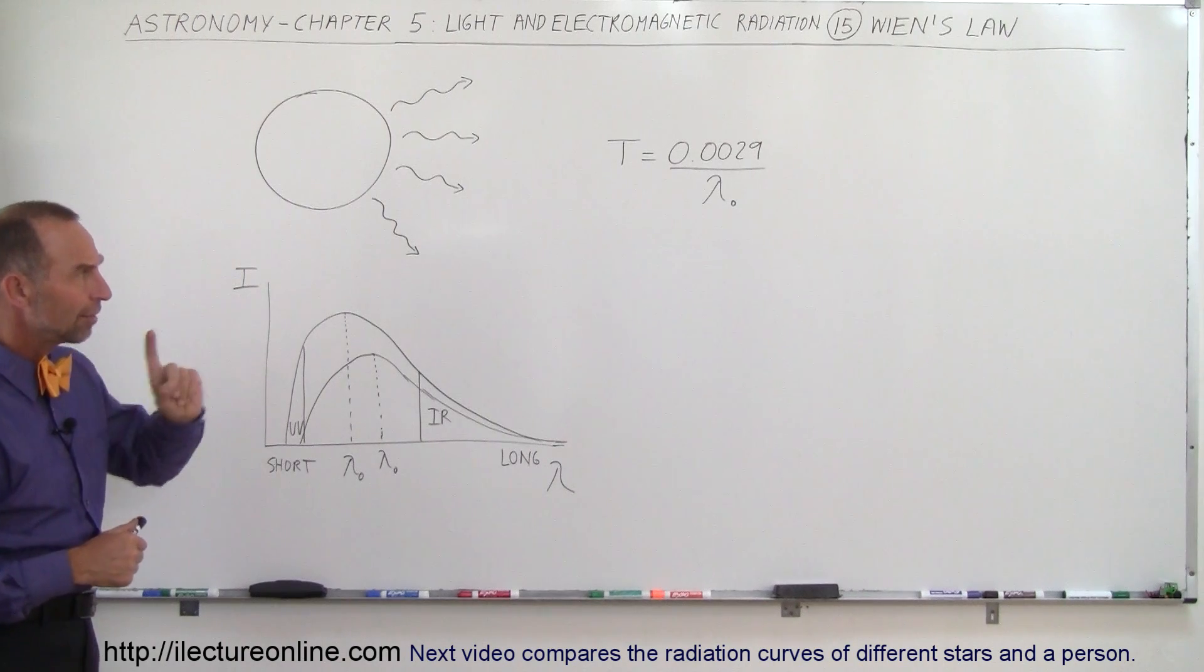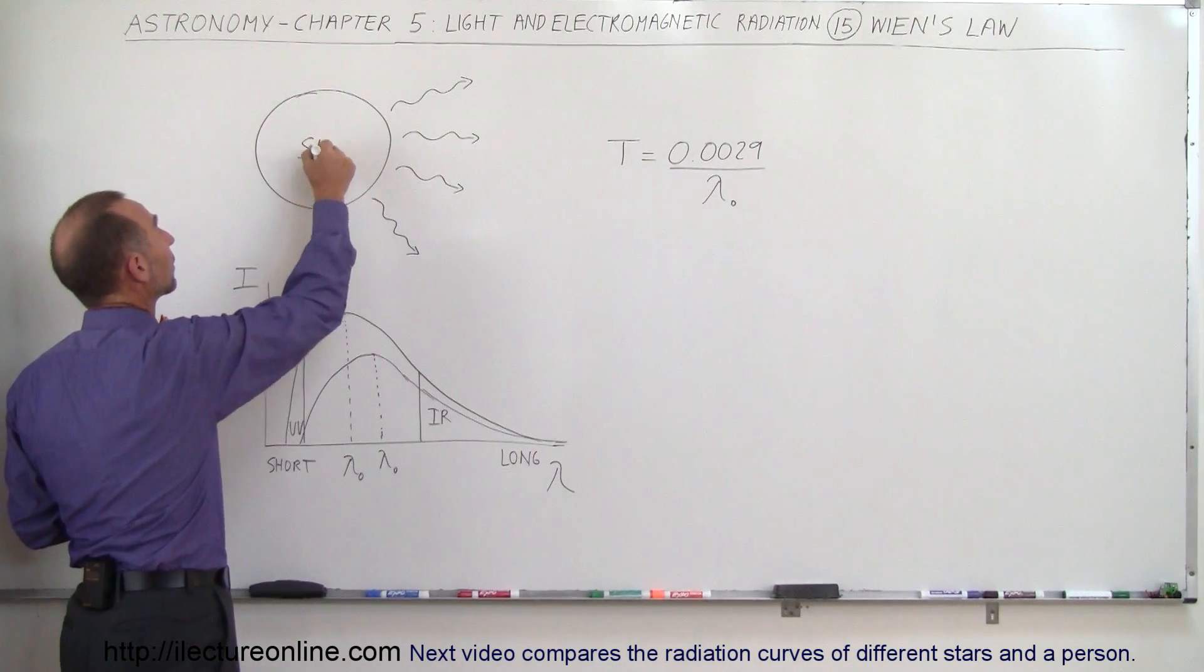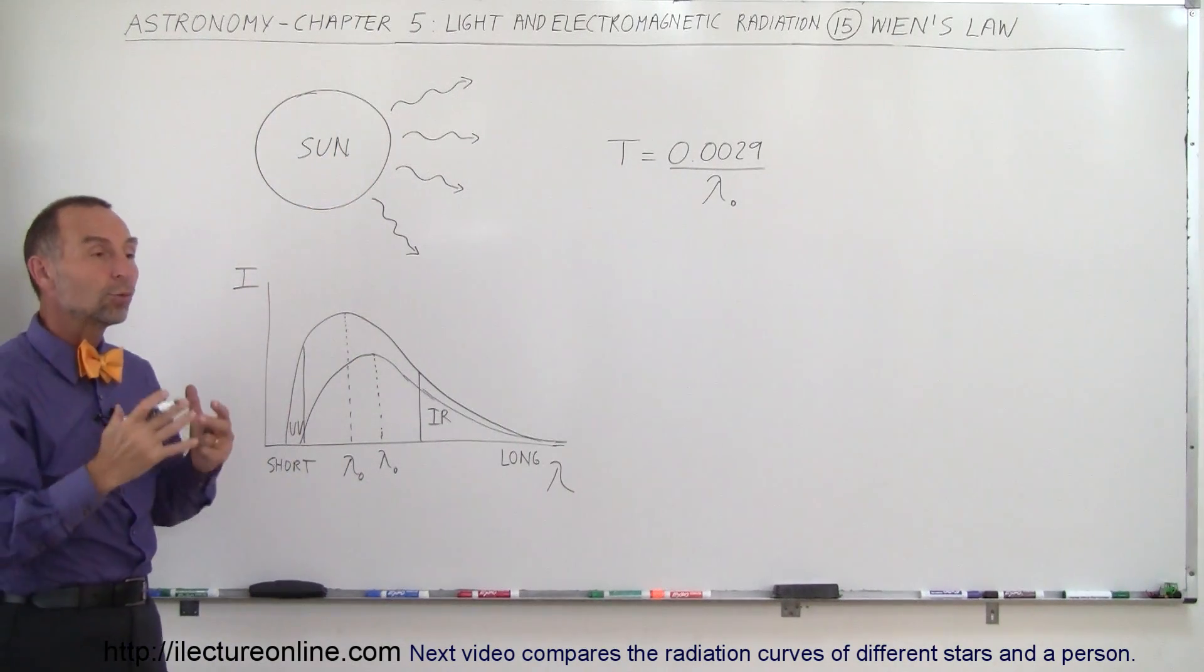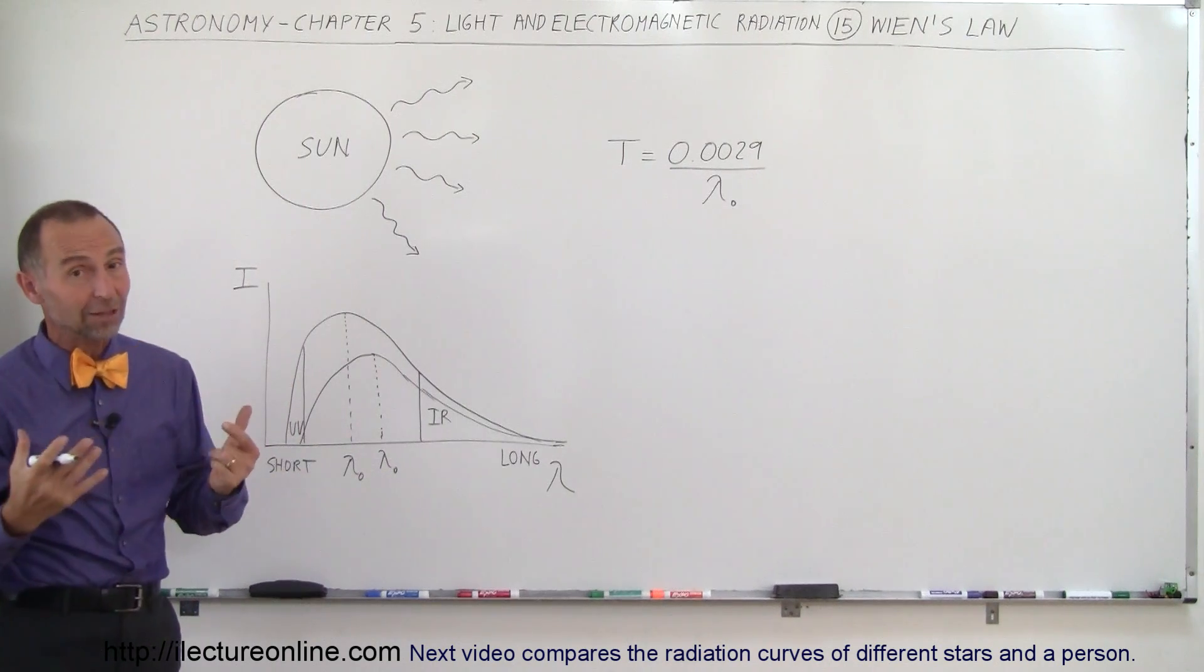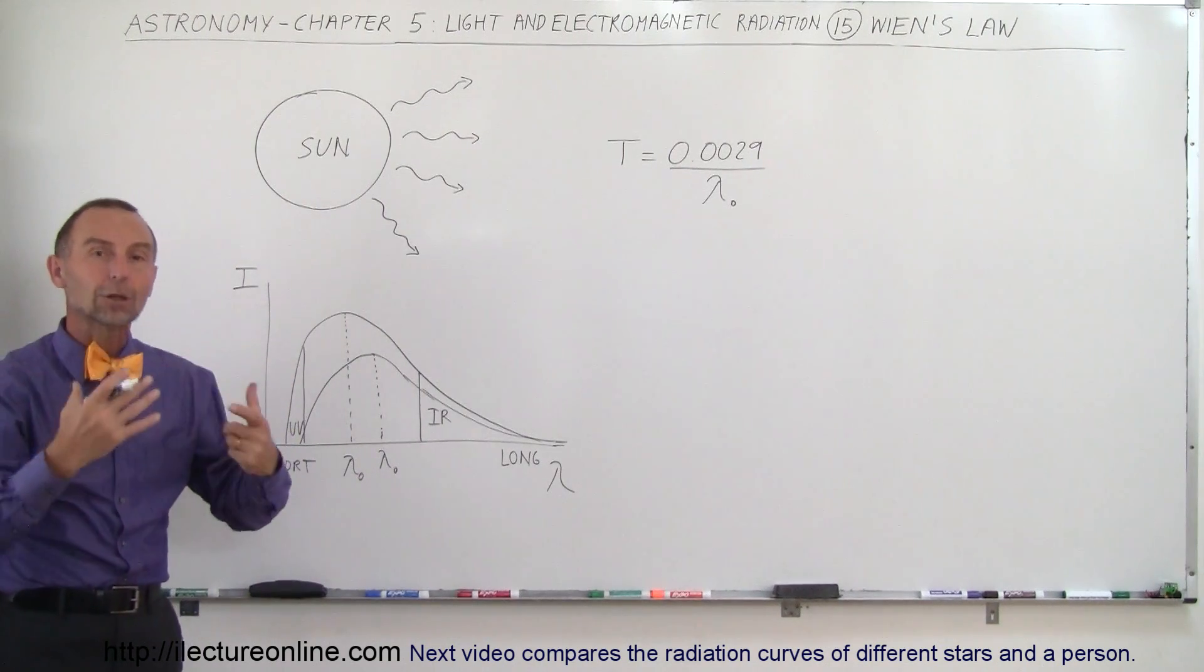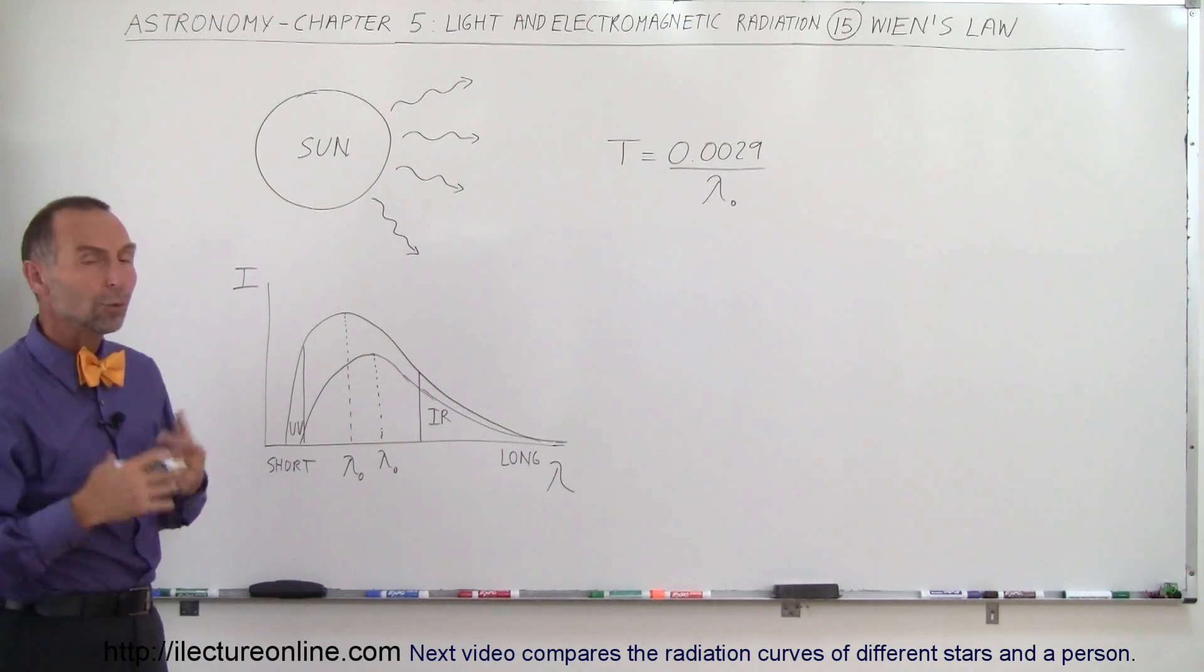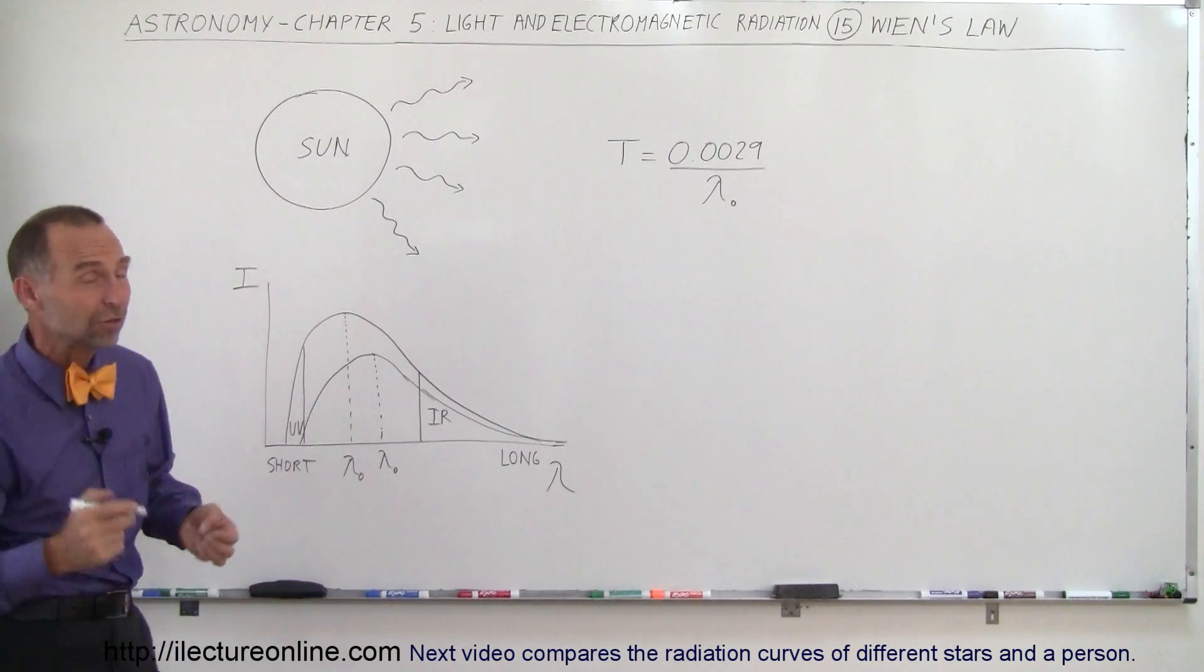Now, let's try to use Wien's equation for example with the sun. We know what the temperature of the sun is, at least on its surface, because we can measure the wavelength of the radiation coming from the sun. Now with the sun it predominantly gives off yellow light more than any other color and so that's why the sun looks yellow, and the wavelength of yellow light is about 500 nanometers. So let's plug that into the equation and see what we get.